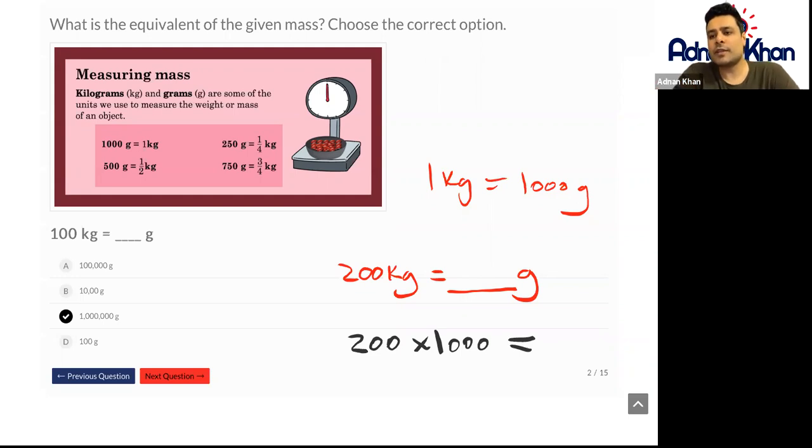Now because 1000 has three zeros, and this time around we're not dividing, we're multiplying, we're just going to add these three zeros at the end of 200. So we have 200, and now we add these three zeros, one, two, three, at the end.